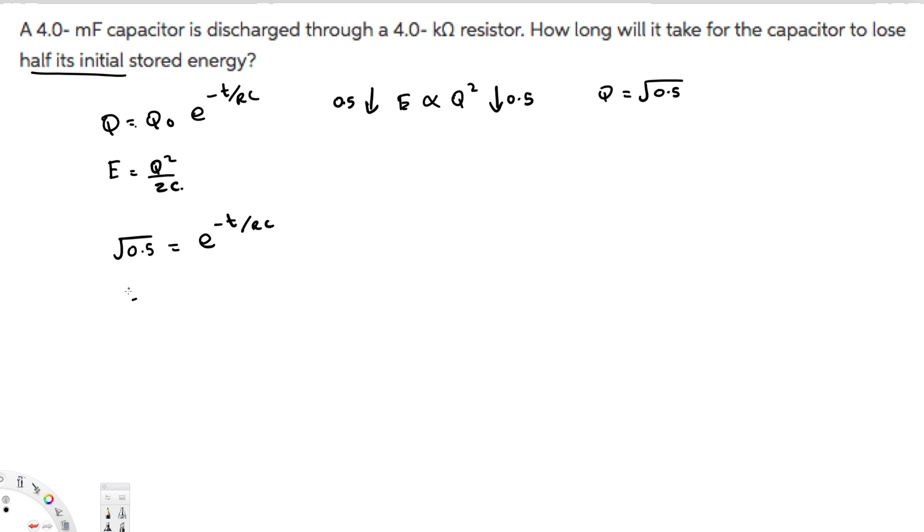If you rearrange this, e to the minus t over RC gives us 0.707. To get t over RC, we take the natural log of both sides. Taking ln of 0.707 gives us negative 0.346.